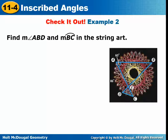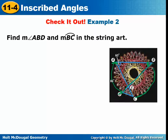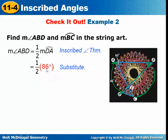Here's a picture of string art. In this picture we have many angles, but one shows that the measure of angle ABD is what we want. We can see that its intercepted arc is 86 degrees. Using the theorem — the inscribed angle is half of the measure of its intercepted arc — it's half of 86. So the measure of angle ABD is 43 degrees.